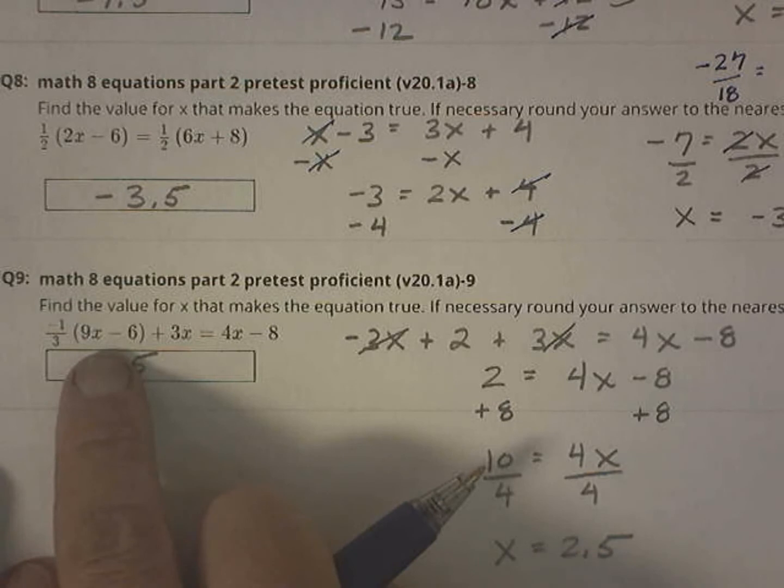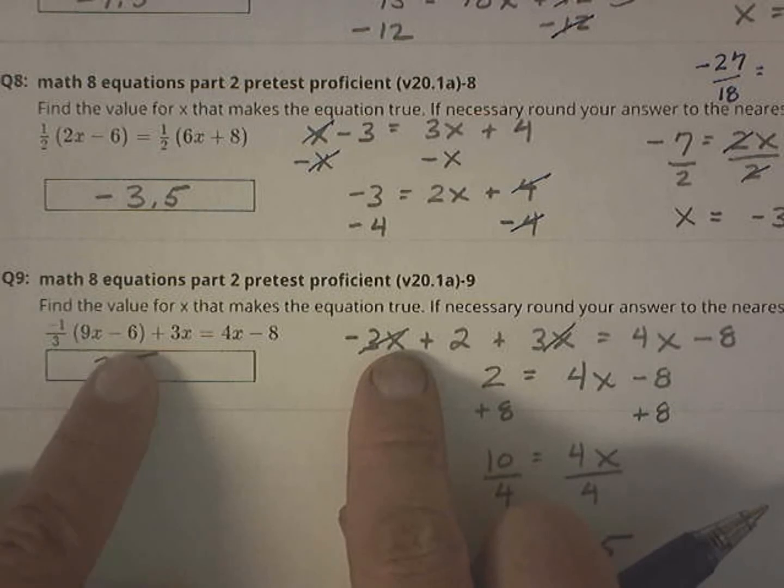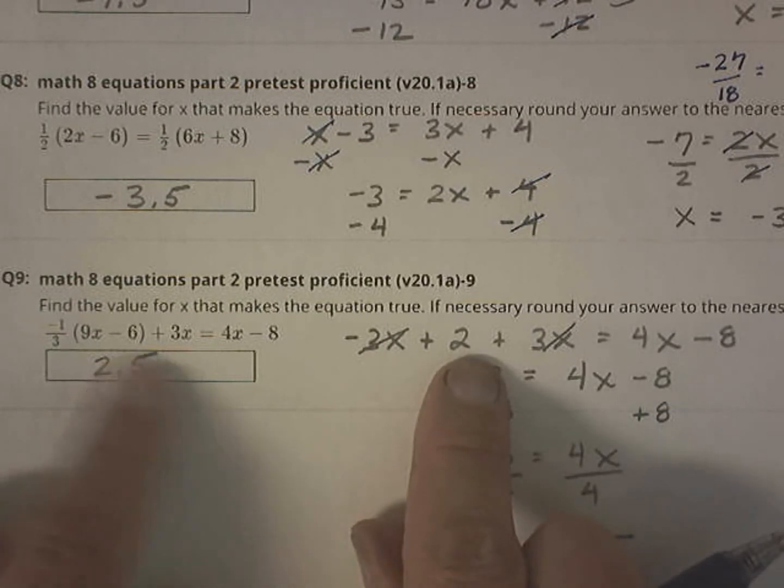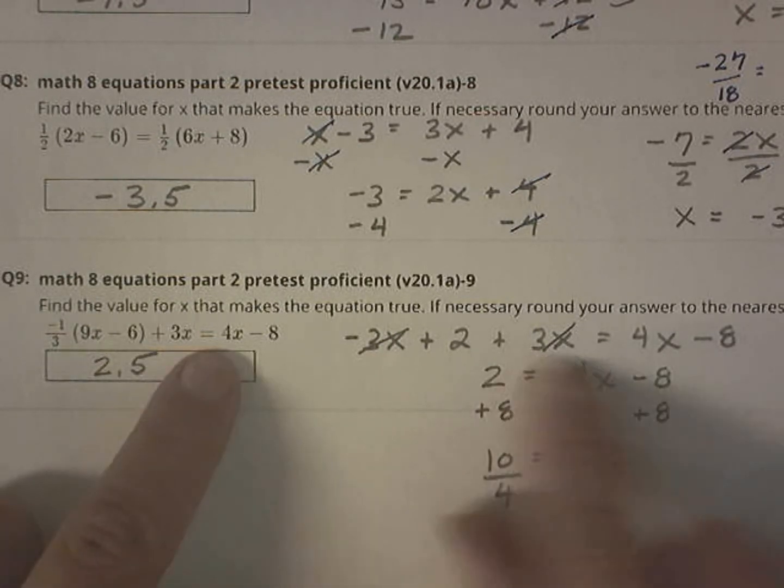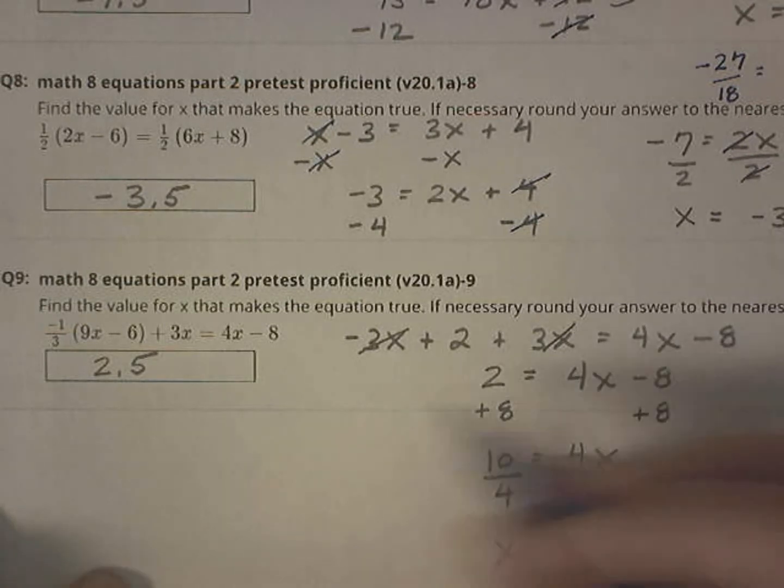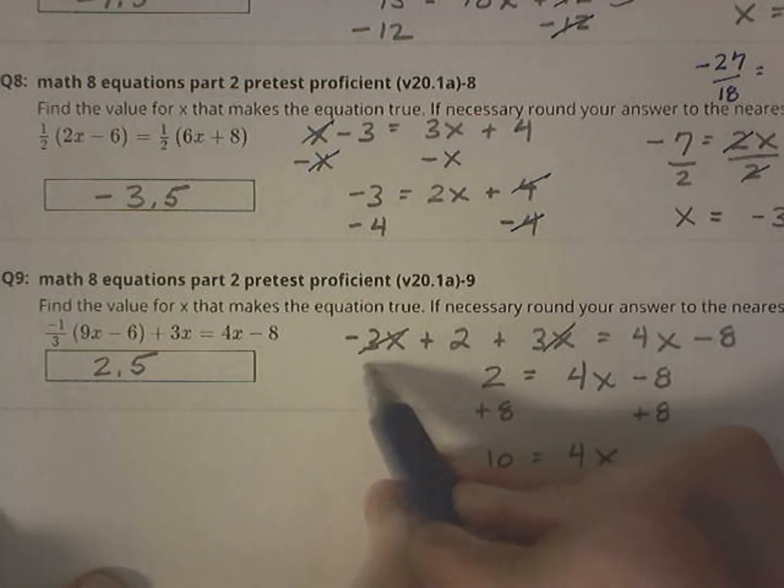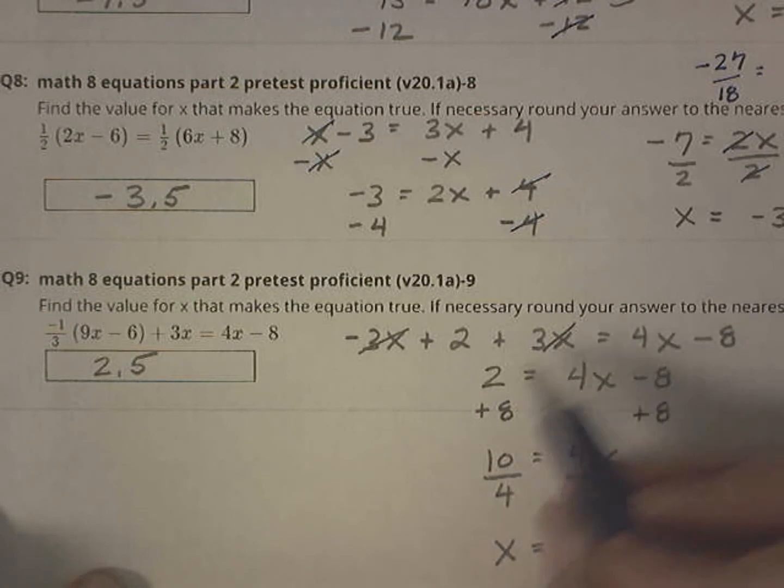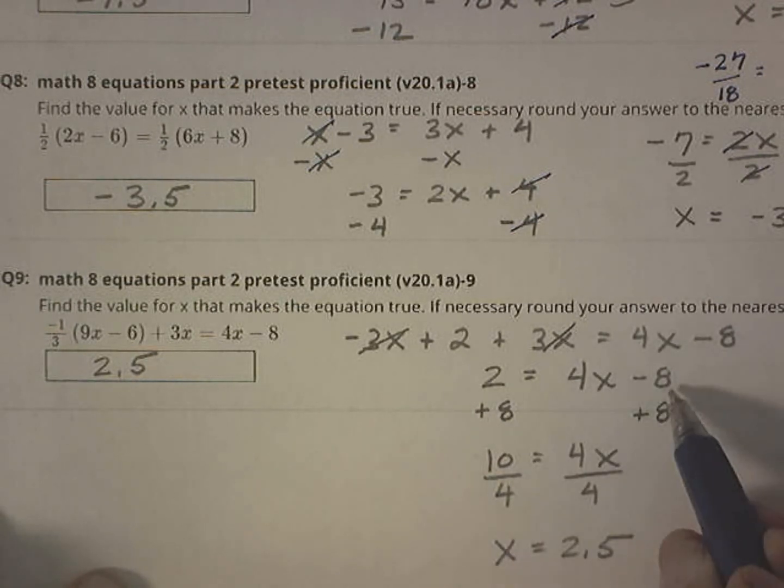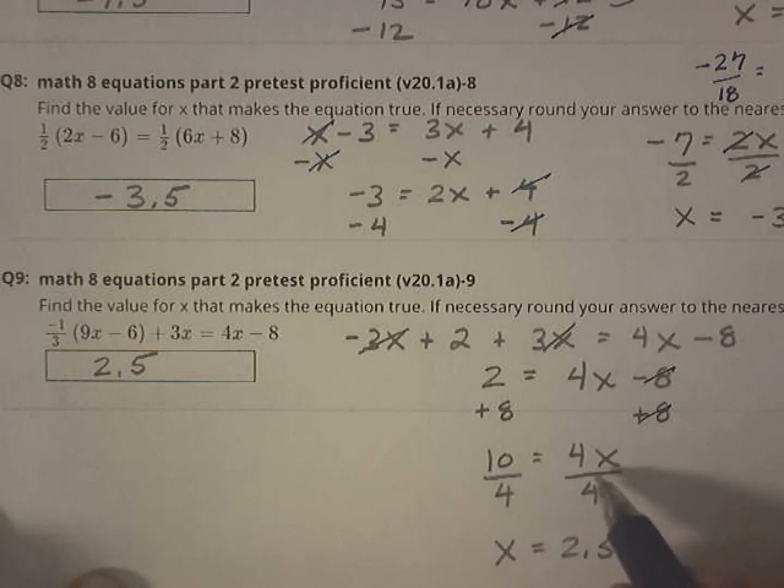Negative 1 third of 9x. That's going to give me negative 3. Negative 1 third of negative 6 is positive 2, plus 3x equals 4x minus 8. So I did my distribution. I'm going to combine these two terms. So a 3x plus a 3x, they cancel out. I'm left with 2x equals 4x minus 8. Adding 8 to both sides, takes that to a 10. Dividing both sides by 4, takes it to a 2.5.